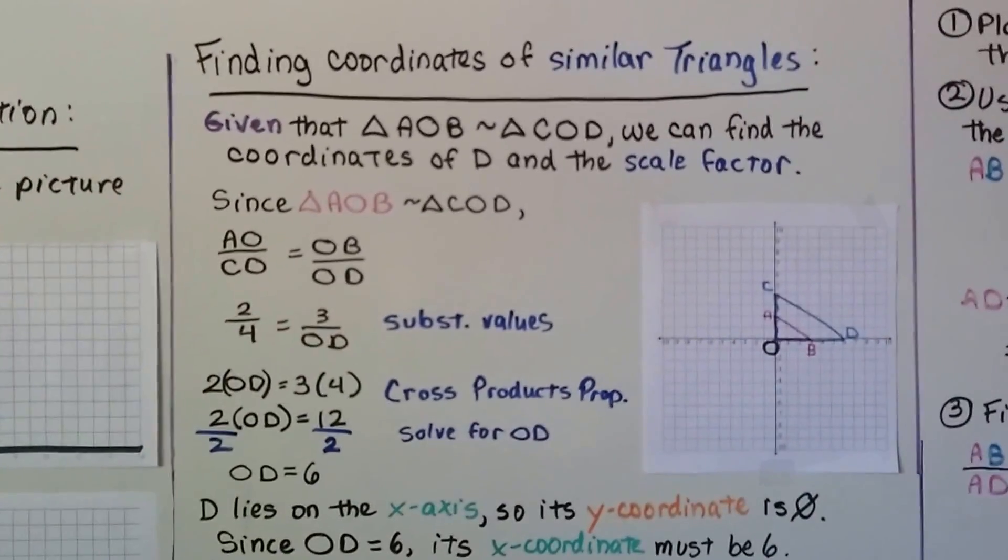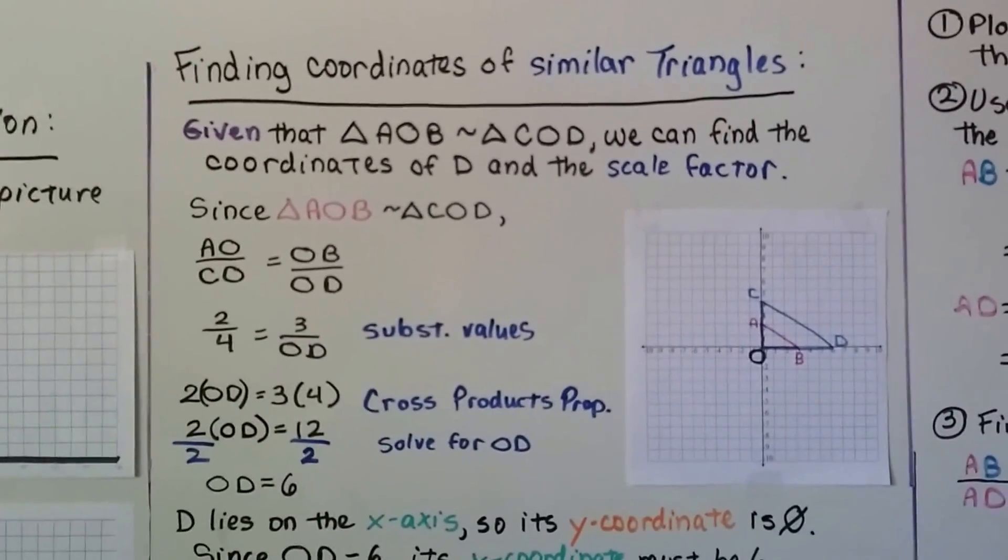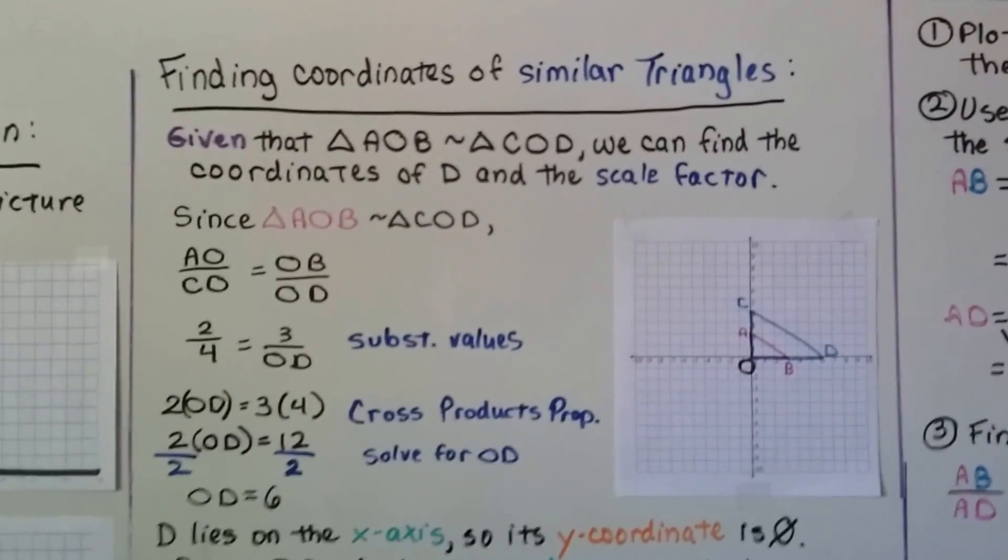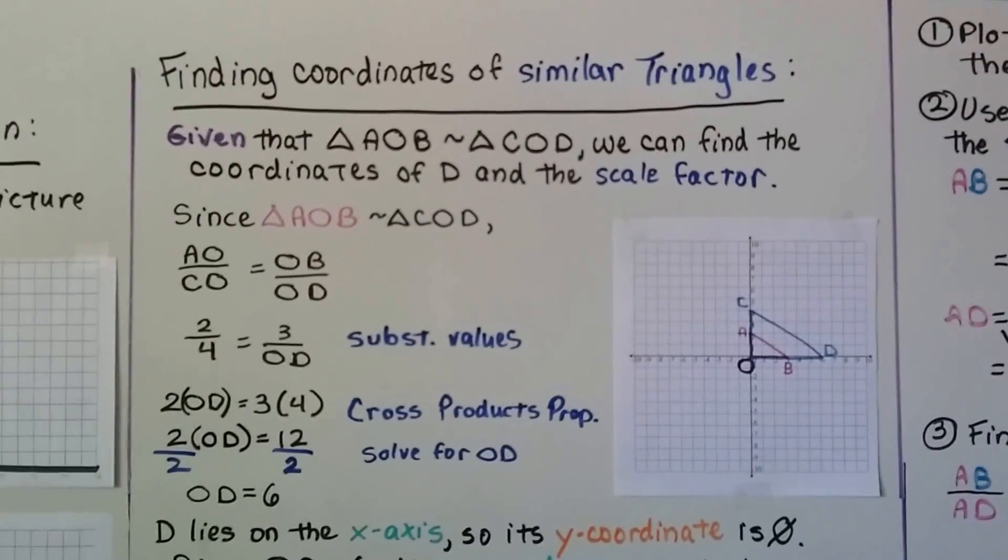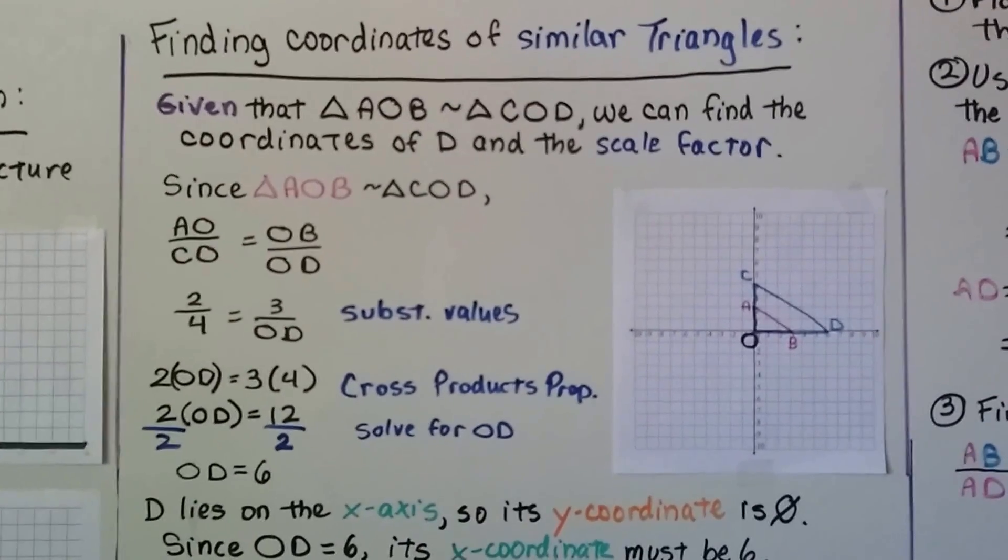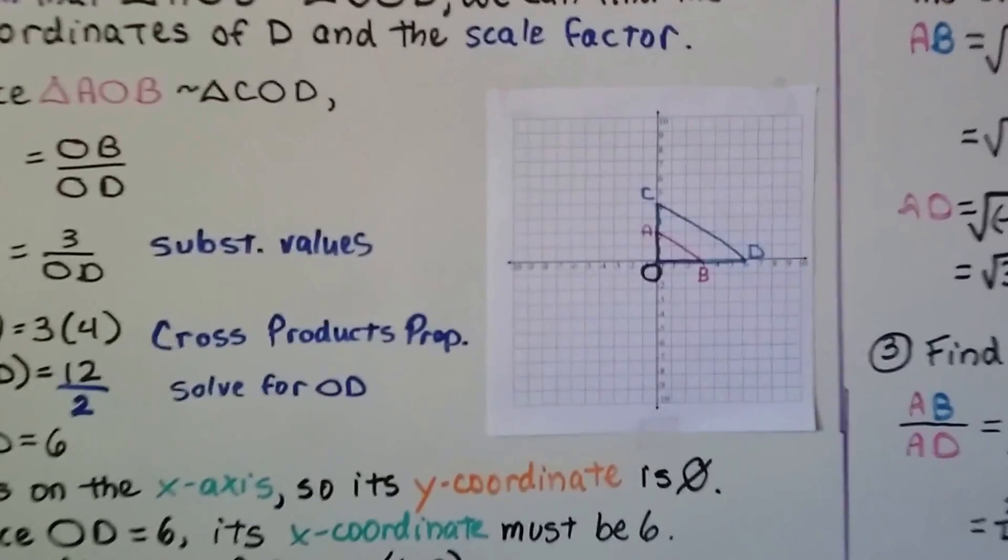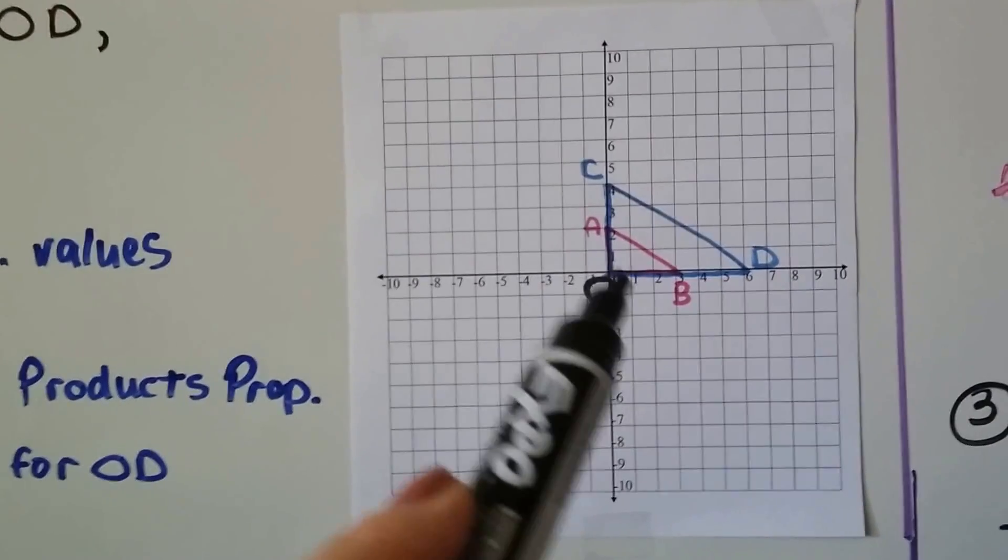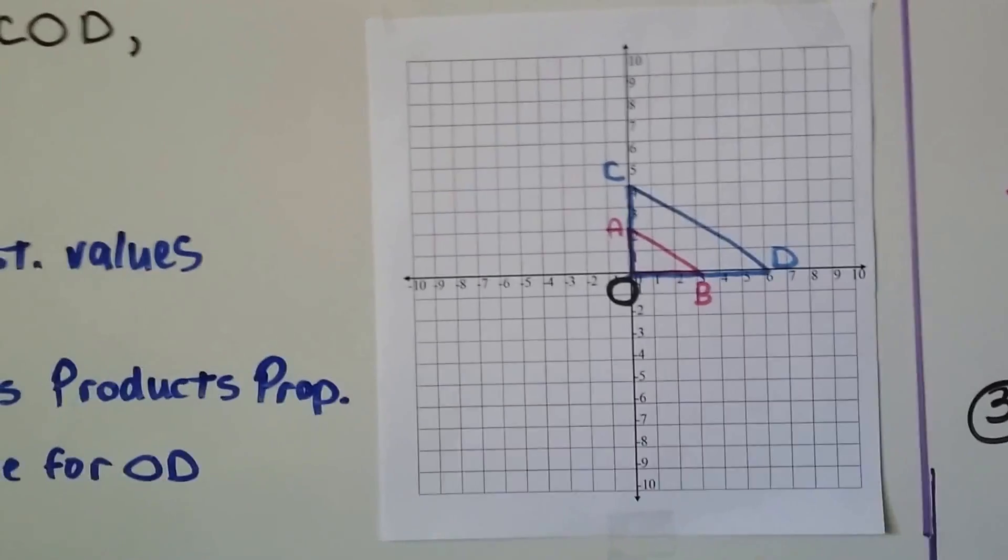Finding coordinates of similar triangles. Given that triangle AOB is similar to triangle COD, we can find the coordinates of point D and the scale factor. We've got AOB, the pink one, and COD, the blue one.